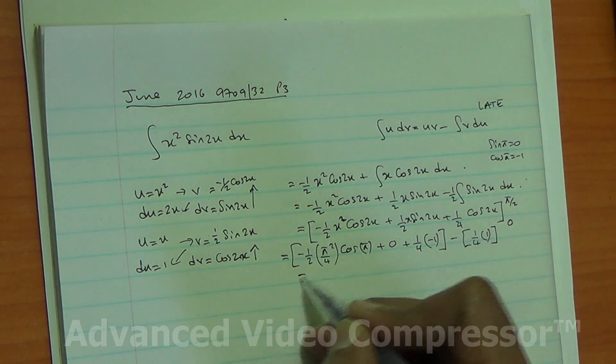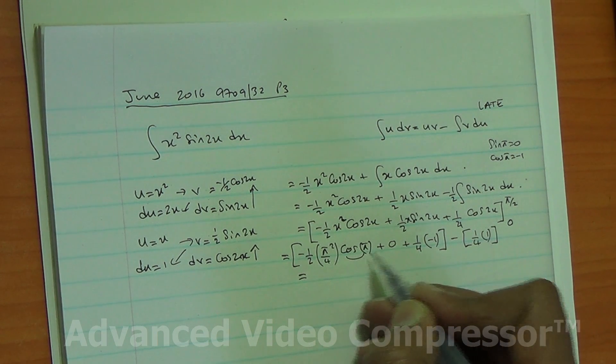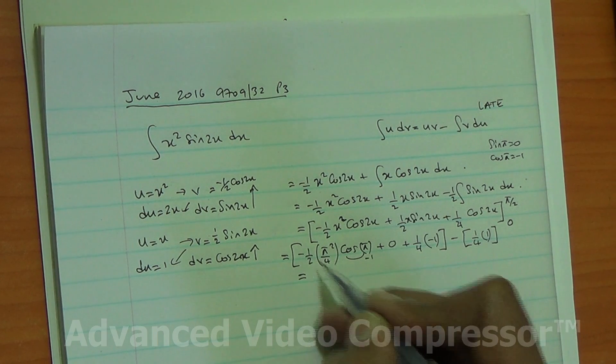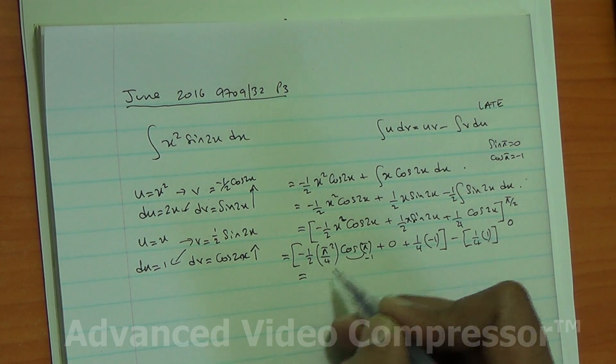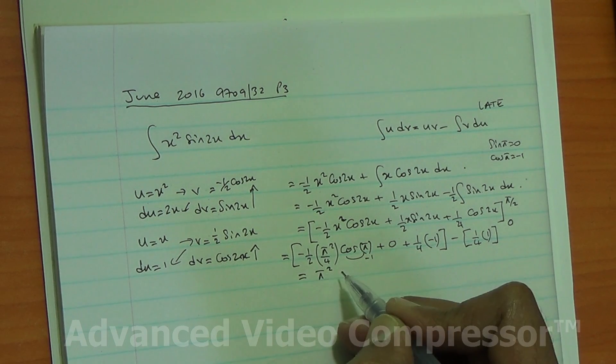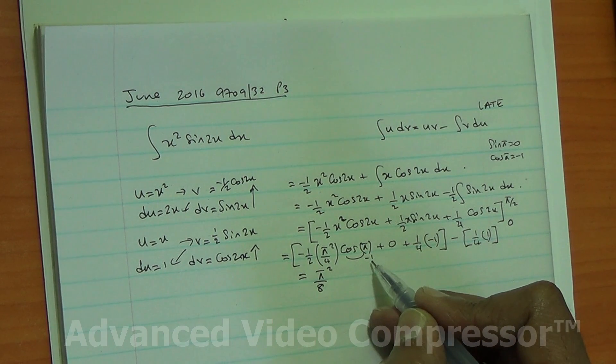And here, cos of pi is negative 1. So, negative times negative becomes positive, and I got positive pi squared, 4 times 2 is 8. This has been multiplied here, minus times minus is plus, minus 1 quarter.